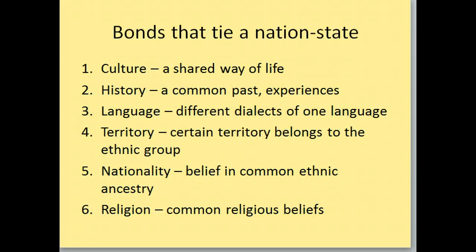What ties a nation-state together is going to be culture — the shared way of life — history, having a common past and experiences, having a common language even with different dialects. Like Boston has a different dialect of English than Georgia, but they still share the same language. Territory — the territory that belongs to that ethnic group. Nationality — the belief in the common ethnic ancestry. And then religion — the common religious belief they have. All of these things help tie people together.